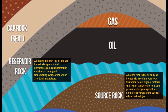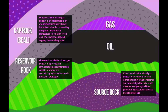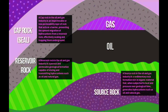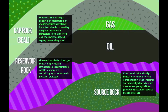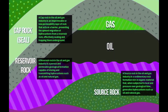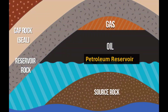But not all rocks are porous and permeable. Some rocks are impermeable, meaning they block the flow of fluid. These rocks can act as seals or barriers that prevent oil and gas from escaping to the surface. When oil and gas encounter an impermeable rock layer above a porous and permeable rock layer, they get trapped in a subsurface pool called a petroleum reservoir.